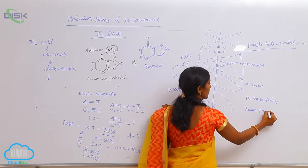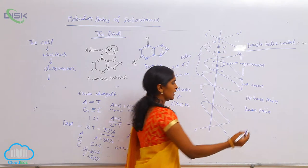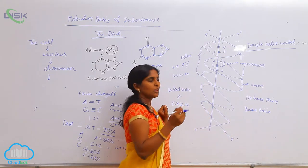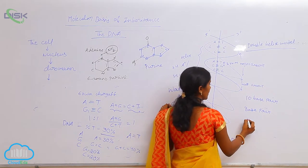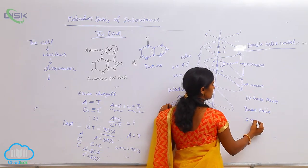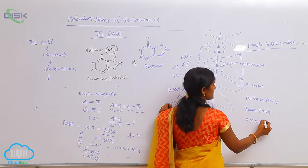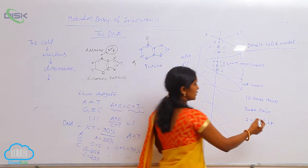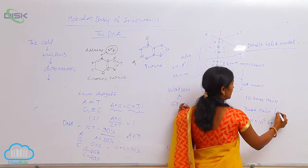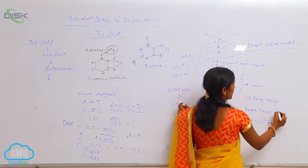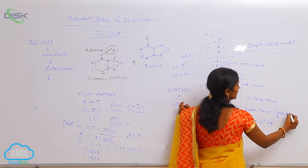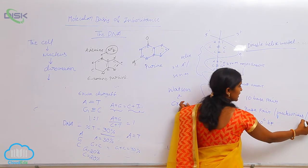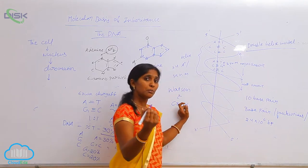For example, take the E. coli bacterium. In E. coli, the length of the DNA is expressed as 2.4 × 10⁶ base pairs. We can also express it in the form of deoxynucleotides — the number of nucleotides, or number of nucleotide pairs.